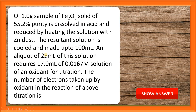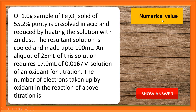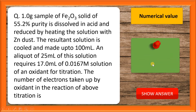25 ml aliquot of this solution is taken. This 25 ml of the solution required 17 ml of 0.0167 molar solution of an oxidant for titration. We are asked to calculate the number of electrons taken up by the oxidant in the reaction of this titration. The answer is six.